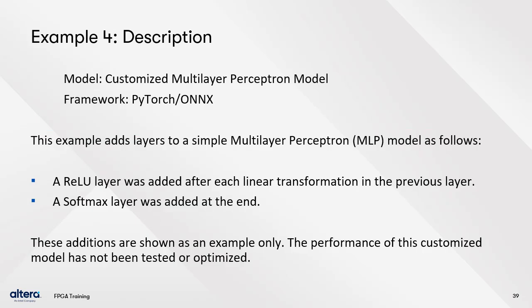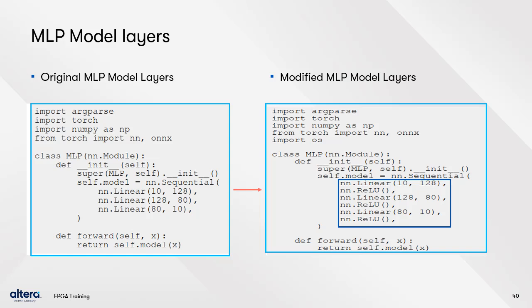Example four uses a model created with the PyTorch framework, which must be converted to ONNX before using it with the OpenVINO model optimizer. This example adds layers to a simple multilayer perceptron (MLP) model — a ReLU layer was added after each linear transformation, and a Softmax layer was added at the end. These additions are shown as an example only; performance has not been tested or optimized. The original MLP model layers and the modified MLP model layers are shown side by side with details highlighted in blue boxes.